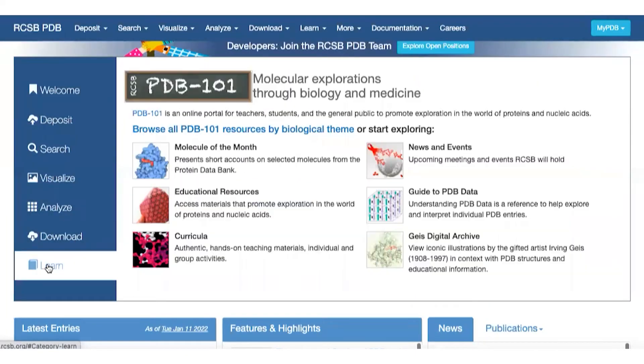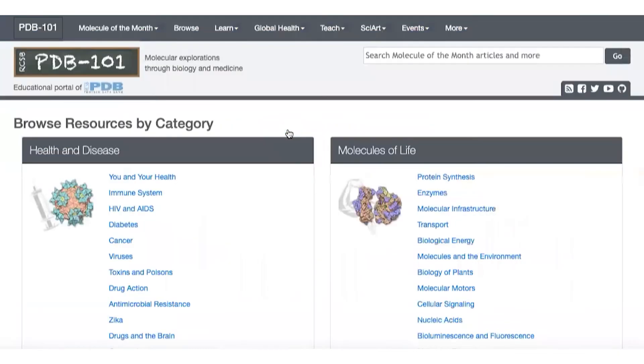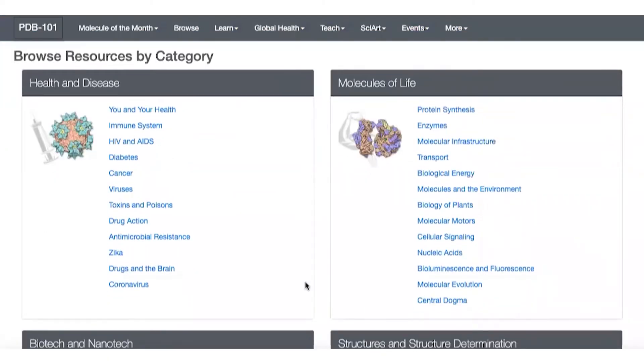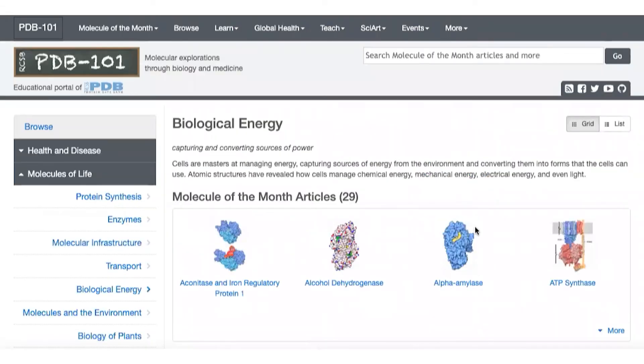A good place apart from just looking at structures is to go to the Learn module. Once you go to the Learn module it takes you to this fairly recent module called Protein Data Bank 101. 101 as you know is the generic term used for a basic course. For example, the course you are going through right now is a 101 course. You can use this to go through biological themes. You can explore 101 resources by biological theme. You have all these themes which are here and the coronavirus will be part of the themes.